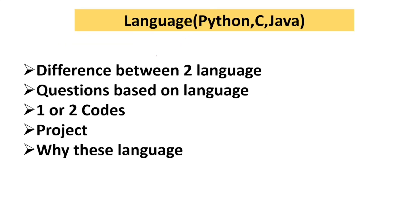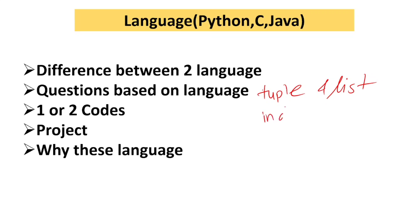For the language section: if you prefer Python, they will ask why not Java, and the difference between Python and Java. They can also ask the difference between C and Java. If you choose Python, they will ask questions like the difference between tuple and list, what is indexing, what is slicing.